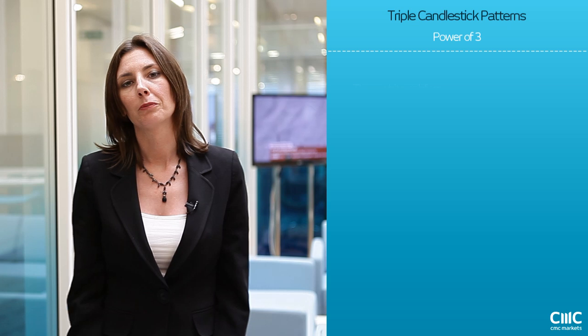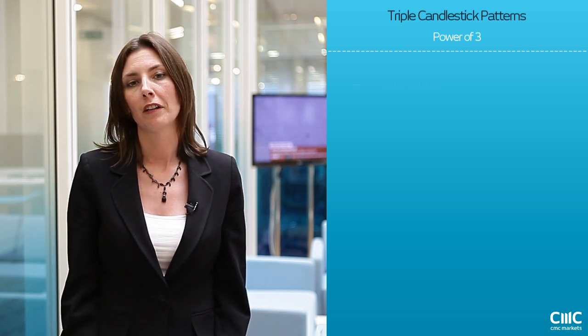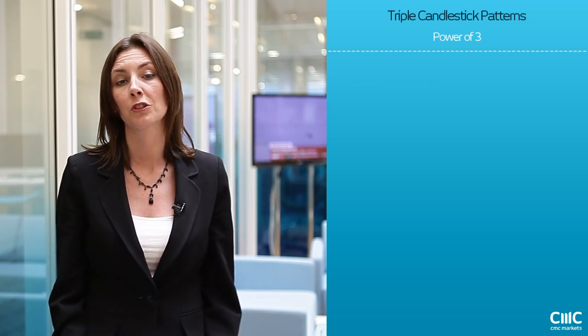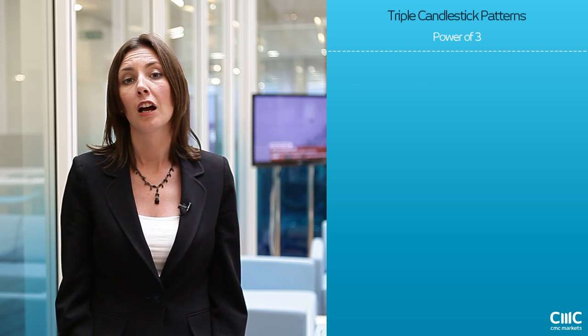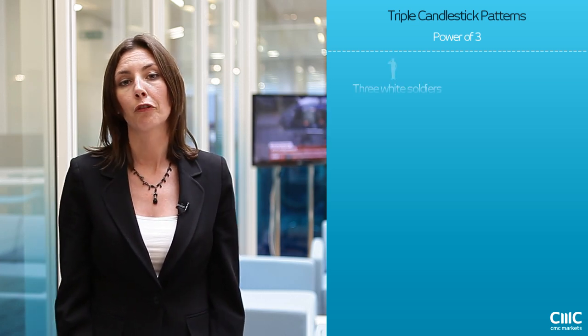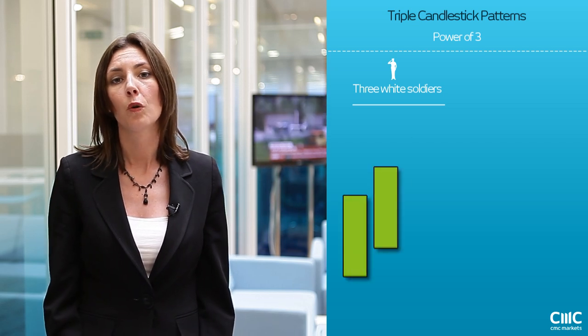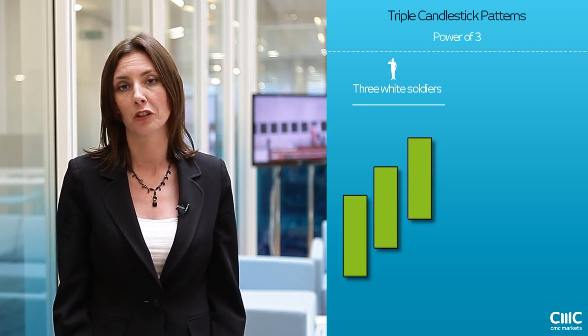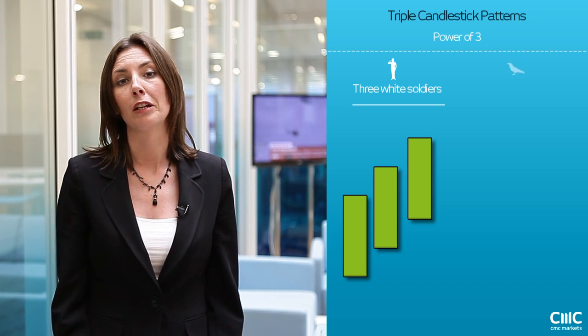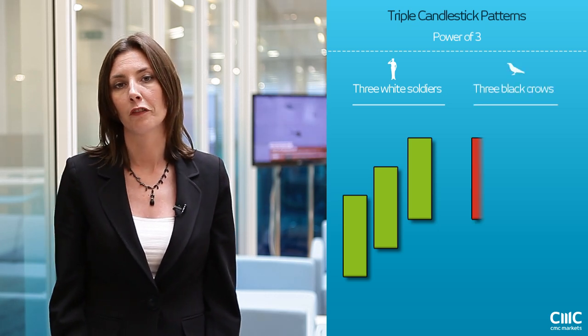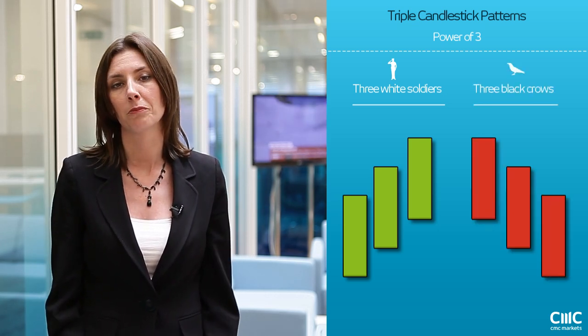In pre-modern Japan, the number three had very mystical properties. As a result, you'll find a lot of patterns are based on the number three. For example, three white soldiers, three long candlestick patterns one after the other, is quite a bullish move. Then you've got your three black crows, which conversely will be seen as a very bearish move.